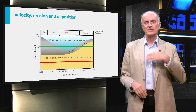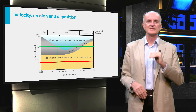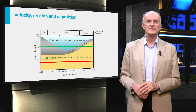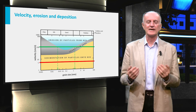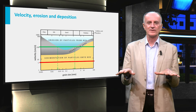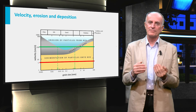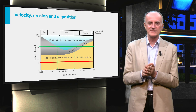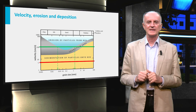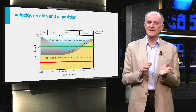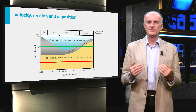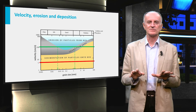Consider now a river flowing at 100 cm per second, represented by the green line. This river will not be able to pick up grain classes larger than 5 mm lying on the riverbed. On the contrary, the river will pick up all grains smaller than 5 mm and larger than 0.04 mm. Interestingly, finer grain classes will not be removed from the river bottom because of the electric forces keeping these clay minerals together.